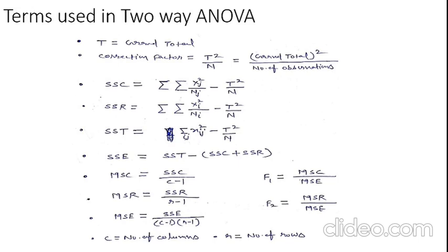SSC will equal to summation of summation of X_j squared upon n_j minus T squared upon N. Similarly for SSR and SST are given. SSE will be calculated as SST minus the bracket SSC plus SSR.